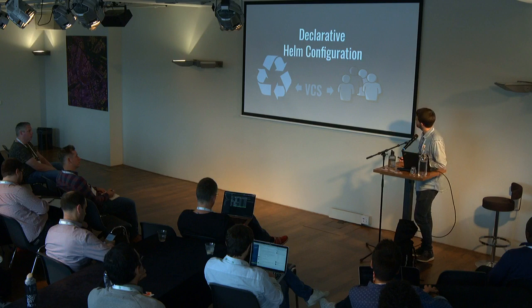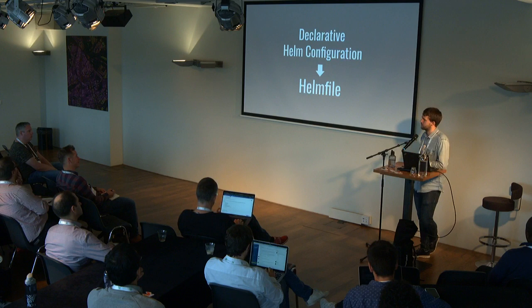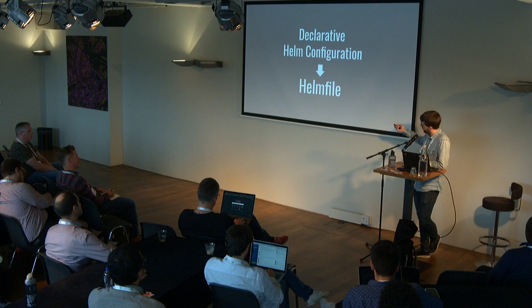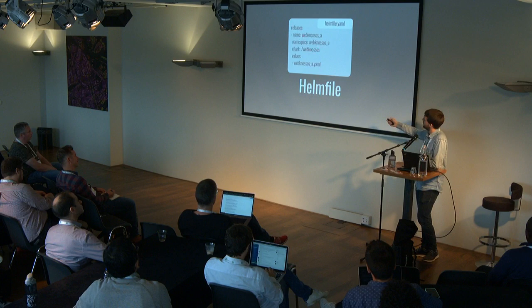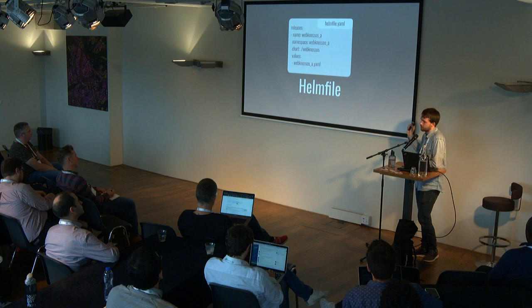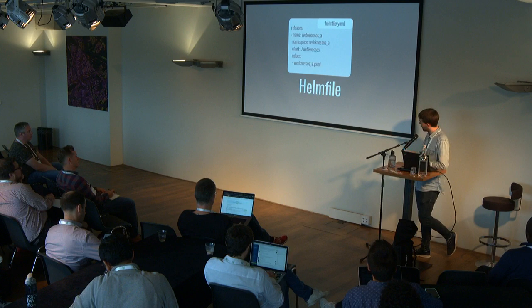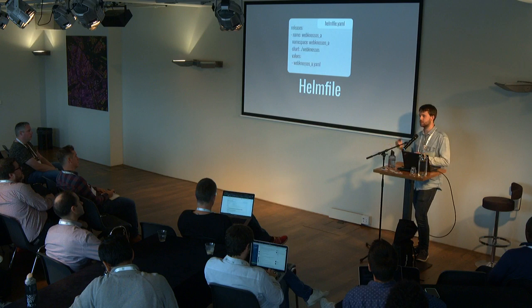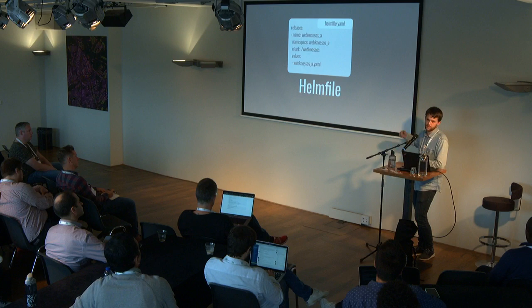We want this for our Helm releases. There are multiple solutions; what we use is Helmfile. There is also another talk about Flux, which works as well. With Helmfile, you specify a `helmfile.yaml` and declare the releases you want: the name, namespace, chart, and values file. This is a declarative configuration for your whole application state — one release or multiple, it doesn't matter. Helmfile can then run `helmfile apply` and upgrade your state in Helm to exactly what you declared. Helmfile gives you the mechanism to synchronize your declarative configuration with Helm.